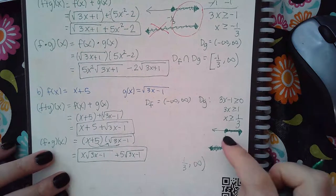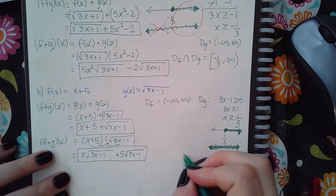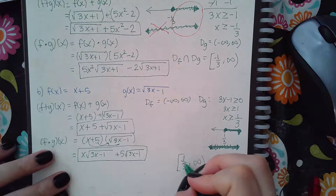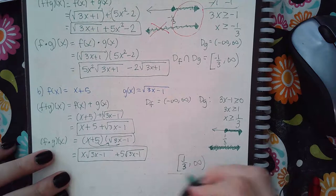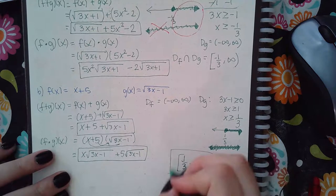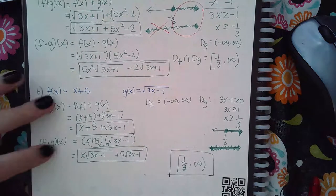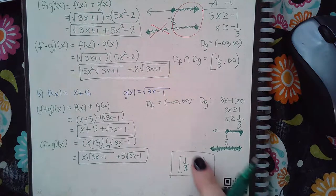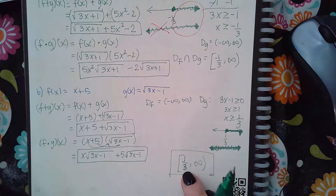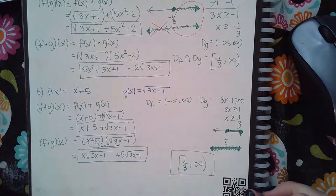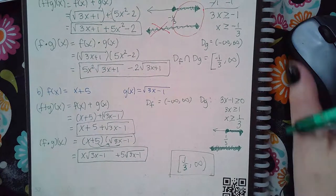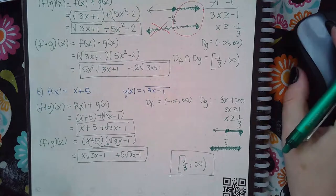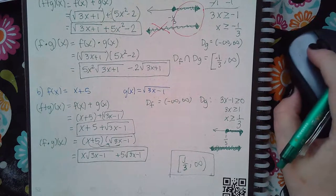They are solid in both places, so we put a bracket around that one-third. This is the domain of both of these combined functions. The only one that's different is the division, which is the same thing but you have to remove an extra value or values depending on the problem.